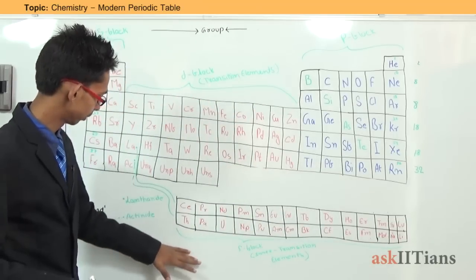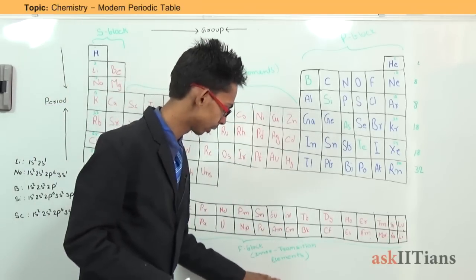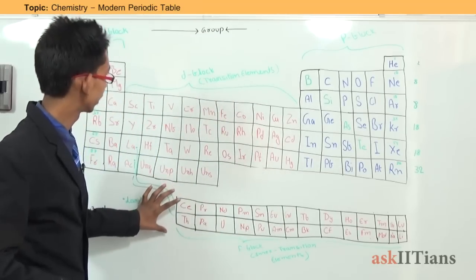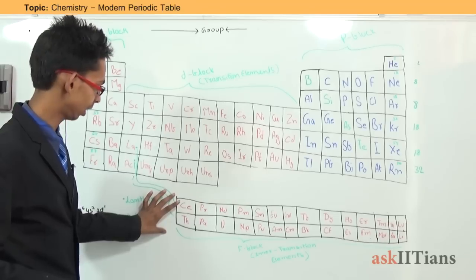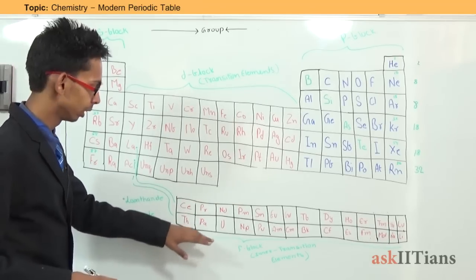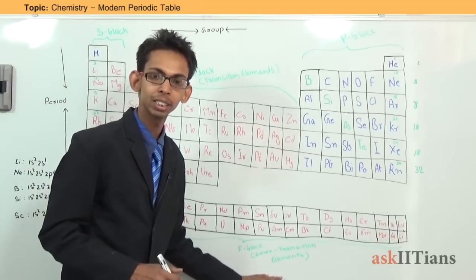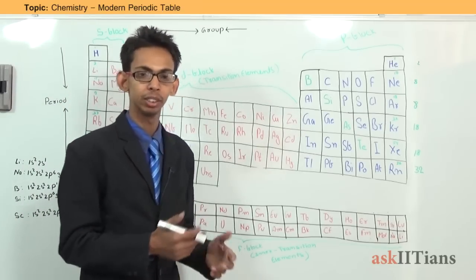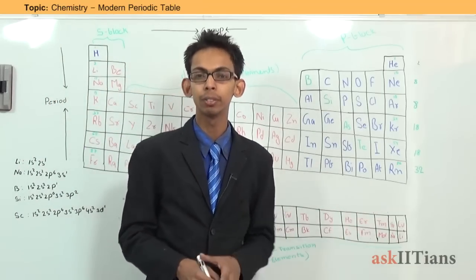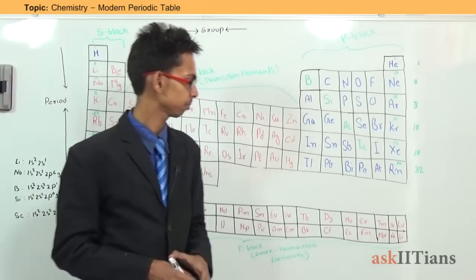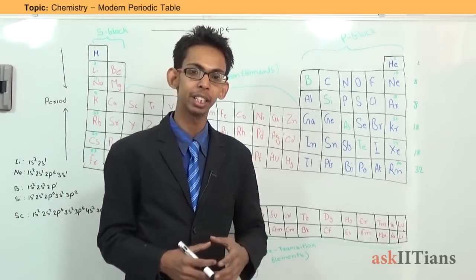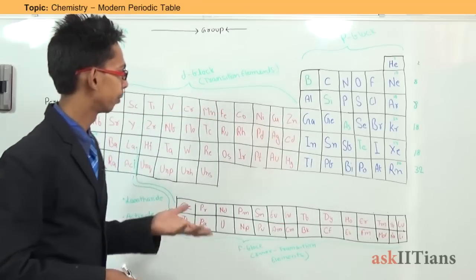There is another group known as F block elements, and these are situated outside the main table. When we write the electronic configuration of any of these elements, we find that the last electron enters an F subshell. So on the basis of electronic configuration, the elements of the periodic table are classified into four groups: S block, P block, D block, and F block elements.